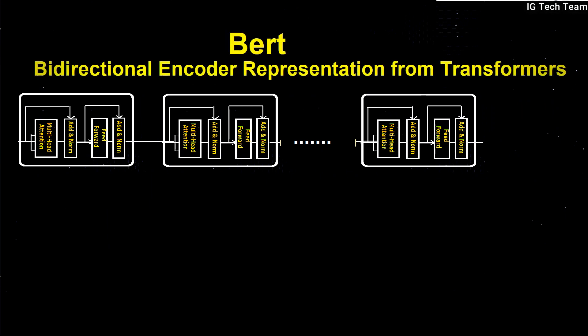That is, BERT stands for Bi-directional Encoder Representation from Transformer. BERT was introduced by Google in late 2018, and as you have already seen, it is based on Transformer architecture. BERT is a deeply bi-directional model — it learns information from both left to right and right to left.